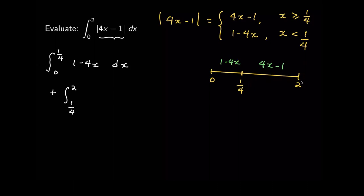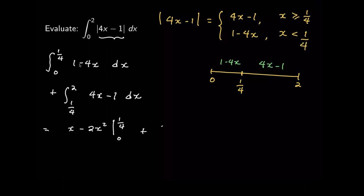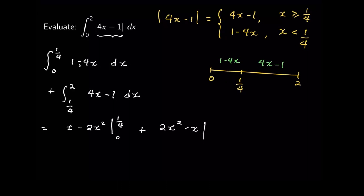The absolute value of 4x minus 1 becomes 4x minus 1 on the second interval. We can now integrate: the integral of (1 minus 4x) gives x minus 2x squared, evaluated from 0 to 1/4, and (2x squared minus x) from 1/4 to 2. Evaluating the first expression, substituting x equals 1/4 gives 1/4 minus 2 times 1/16, and when x equals 0 everything is 0.